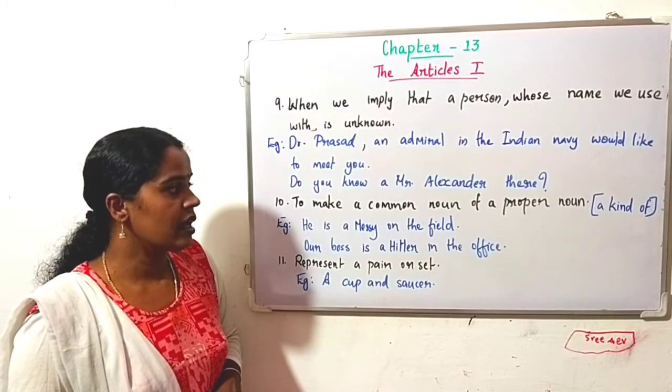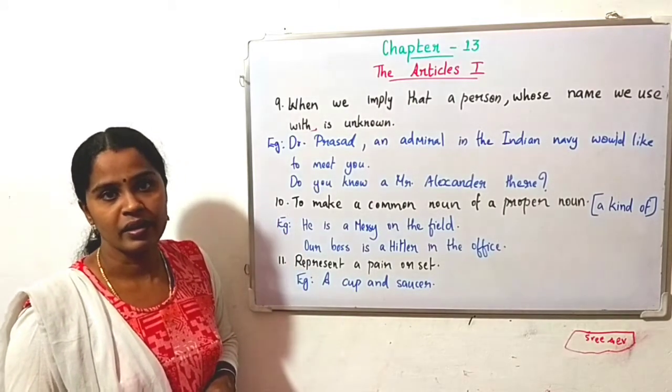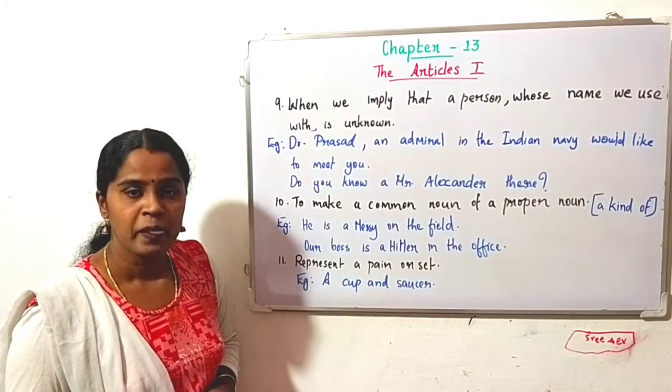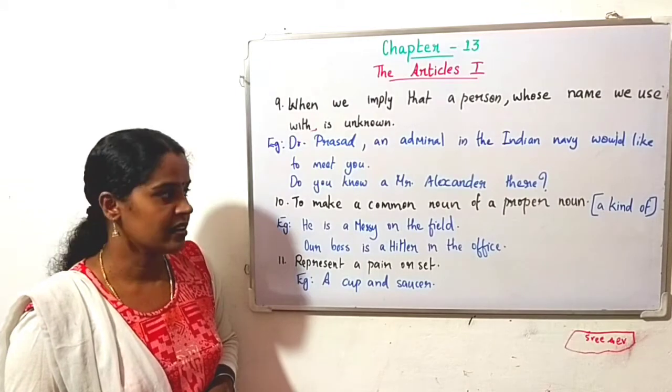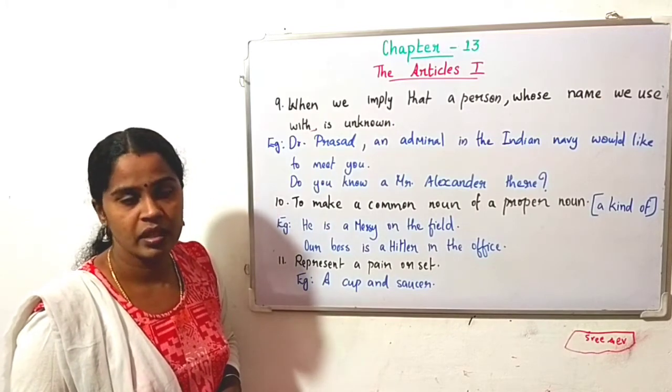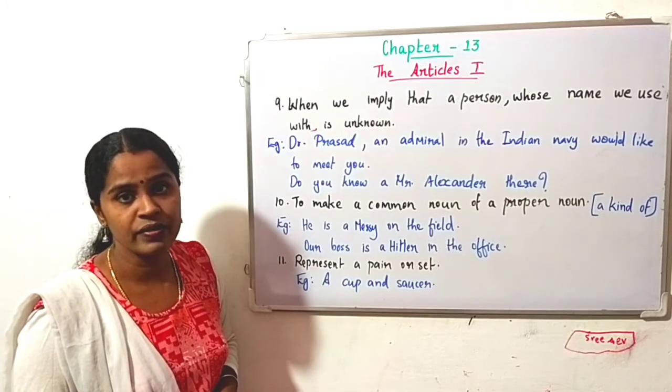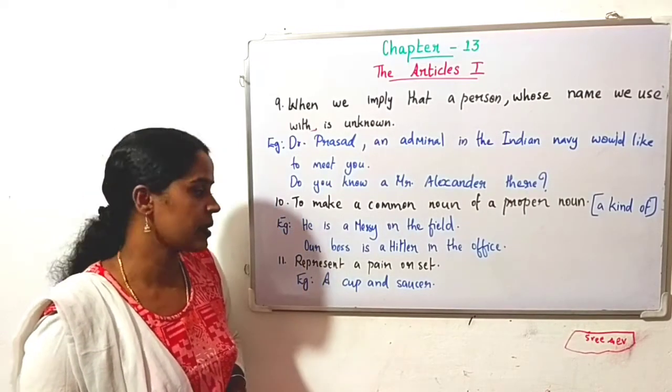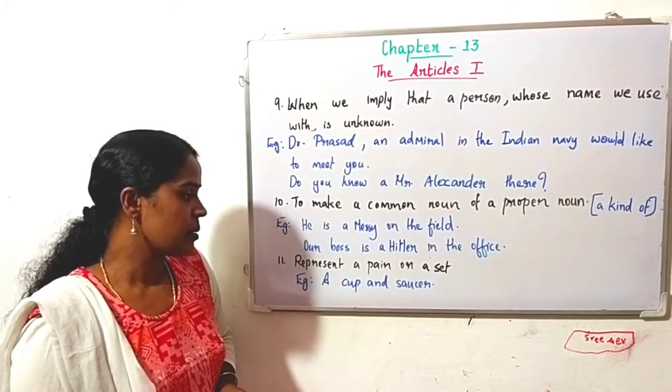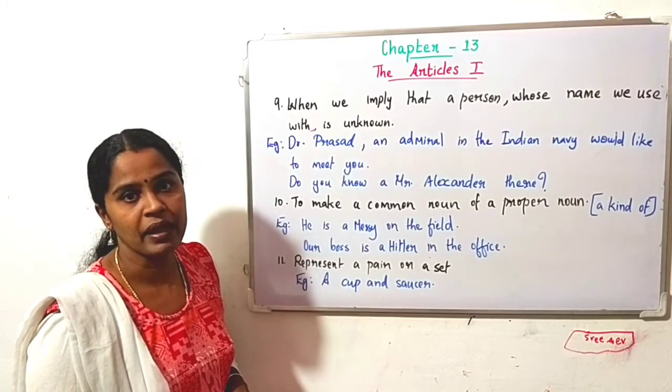Tenth one: to make a common noun of a proper noun. See the examples: He is a Messi on the field. That means he is like Messi, a kind of Messi. Then our boss is a Hitler in the office. Here, Hitler means our boss is just like or a kind of Hitler in the office. Eleventh one: represent a pair or a set. For example: a cup and saucer. There it is a set, a set of cup and saucer.